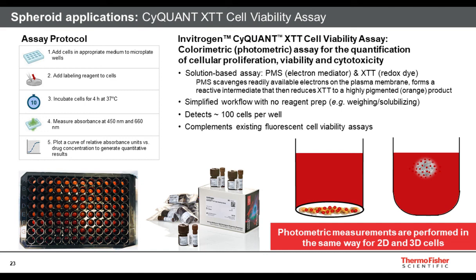CyQuant XCT is an established 2D model photometric cell viability assay that is solution-based. There are two components: XTT, a redox dye, and PMS, an electron mediator that enhances the reduction of XTT. This is an add-and-read assay — mix the two components together, add to treated or untreated cells, and incubate for 4 hours at 37°C. After incubation, measure absorbance at 450 and 660 nm. A greater absorbance value over time indicates more viable cells. Because this is a photometric measurement, detection is through the well — both 2D and 3D model systems can be analyzed the same way on the Varioscan Luxe.